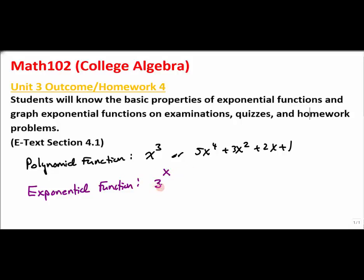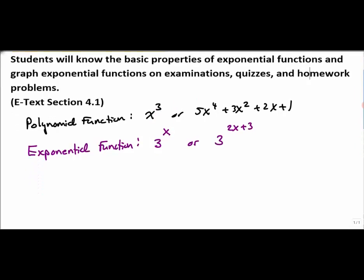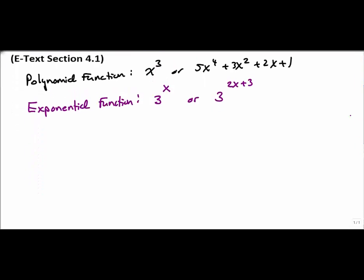The base is some sort of a constant — it's a number — and the exponent is a variable. I could also have a variable exponent like 2x plus 3, where the entire exponent contains the variable. So the difference between a polynomial function and an exponential function is the location of the variable — whether it's part of the base or the exponent.